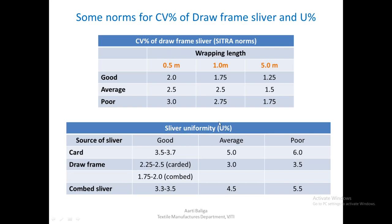For sliver uniformity or U percentage, if the sliver is coming from the card, values between 3.5 and 3.7 are good, around 5 is average, and 6 is poor. For carded drawn sliver at the drawframe, good is 2.25 to 2.5, average is 3, and poor is 3.5. For combed drawn sliver, good is 1.75 to 2. As seen here, the norm for combed sliver is stricter because after combing, sliver uniformity is expected to improve.